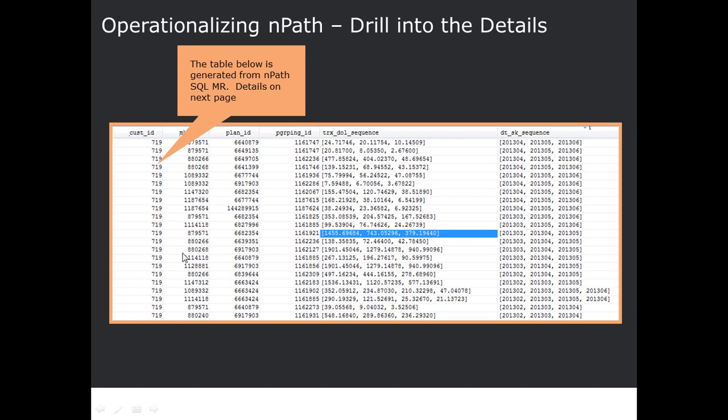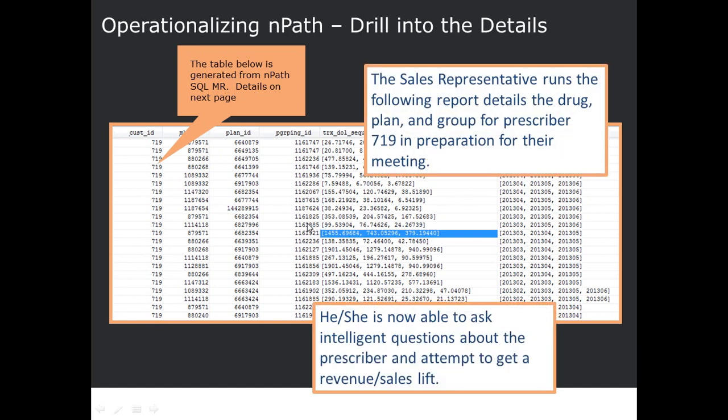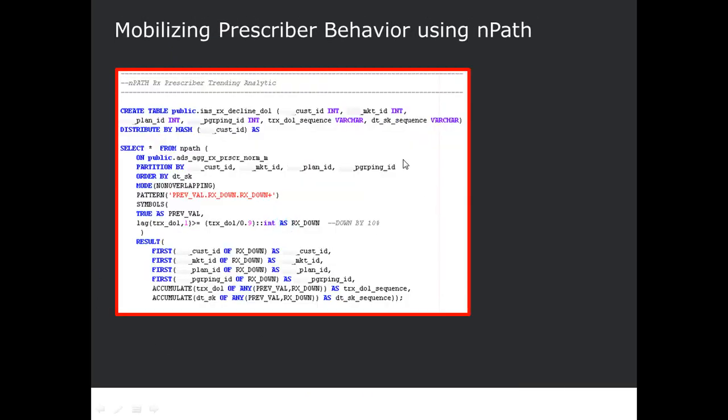And this was the prescriber information. So this data actually was generated by one command using Aster nPath. And nPath is a set of intellectual property that's only available in Aster. And I developed this code right here in about three hours one day last year for a pharmaceutical company. And so what you're seeing here is the select star from nPath. So what you're seeing is ANSI SQL-like statements. And if you look above it, there's a create table as. So there's a CTAS statement, and I'm actually going to create a table called IMSRxDeclineDollars that has these columns in it. And I'm going to use this as my select statement. So it is a true CTAS statement.